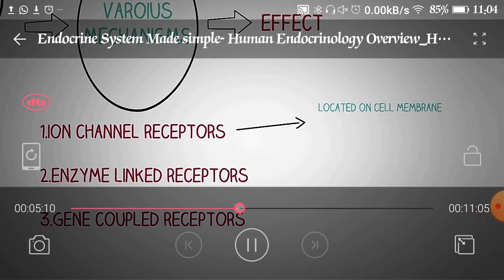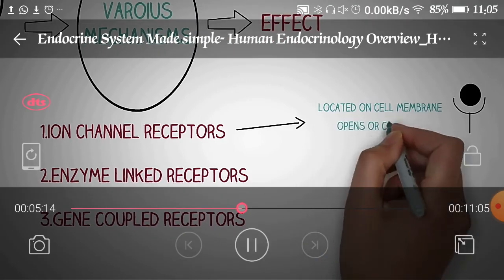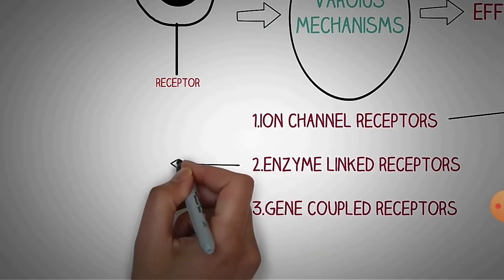By the ion channel receptor mechanism, various ion channels exist — voltage-gated ion channels, calcium ion channels, and others. The receptors open and close due to voltage-gated ions like sodium or potassium. When those ions cause the channels to open and close, ions enter or exit the cell, and this decides the release of the hormone. These are located on the cell membrane and open or close due to voltage, allowing ions to enter.